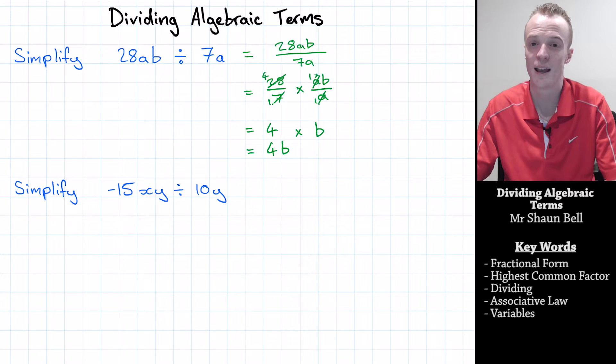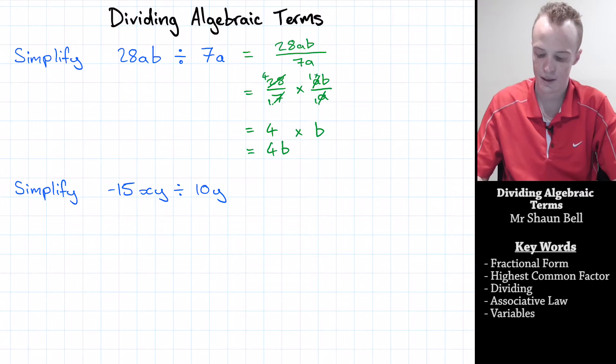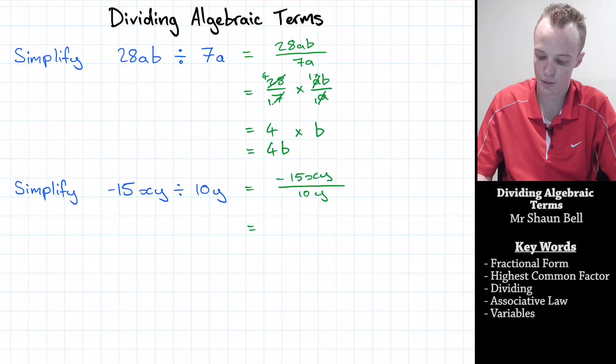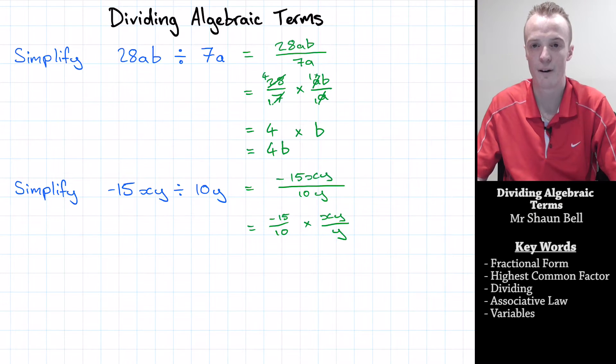And now we've done that problem, let's try those steps again on the second problem. The first step being represent the division in fractional form. So this will equal negative 15xy divided by 10y. And now the associative law says that I can break this problem up. So this is going to equal negative 15 over 10 multiplied by the variables xy over y. And from here I then simplify the fractions.